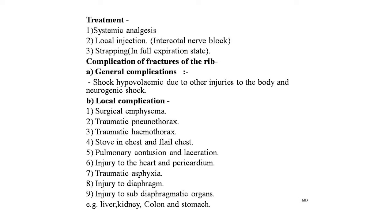Treatment of rib fractures: systemic analgesics should be given; local injection of intercostal nerve block to control pain; strapping in full expiration state — immobilizing the fractured rib was a very popular treatment. Complications of rib fractures are of two types: general and local. General complications include hypovolemic shock due to other injuries and neurogenic shock. Local complications include surgical emphysema, traumatic pneumothorax, traumatic hemothorax, stove-in chest, flail chest, pulmonary contusion and laceration, injury to the heart and pericardium, traumatic asphyxia, injury to the diaphragm and diaphragmatic hernia, and injury to subdiaphragmatic organs — liver, spleen, kidney, colon, and stomach.